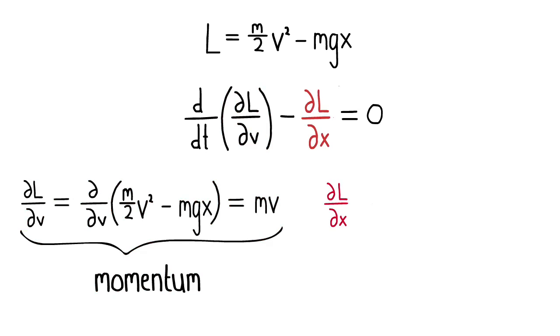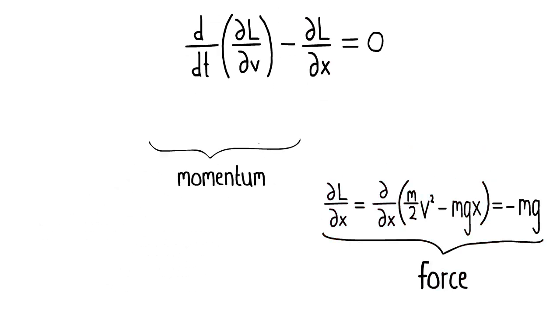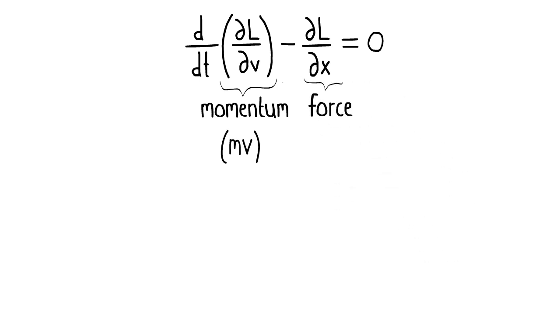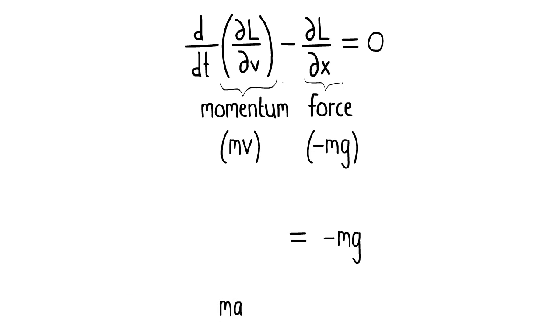Next, we look at delta L over delta x, the partial derivative of our Lagrangian with respect to position x. This gives us minus mg, which is the force experienced by the particle under the influence of gravity. When we put these together, we get an equation of the form, the derivative with respect to t of the momentum minus the force is equal to zero. Or in other words, the rate of change of momentum of the system is equal to the force, which is equivalent to Newton's second law of motion, which says that f equals ma, or force equals mass by acceleration.